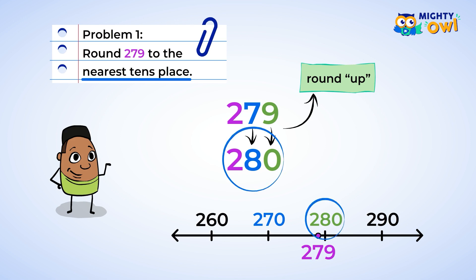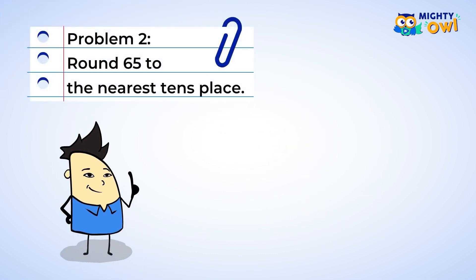You're doing great. Just one more problem to practice rounding. The number this time, 65. 65 is one of the tricky numbers to round in the nearest ten, since there is a five in the ones place. But remember,